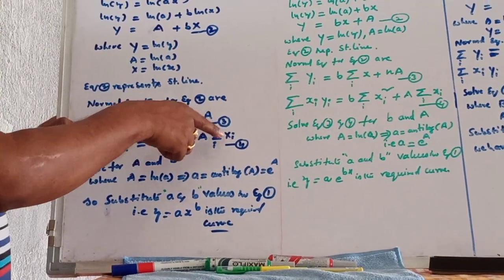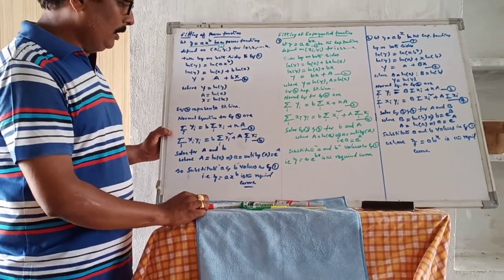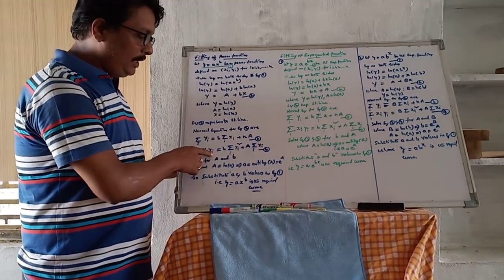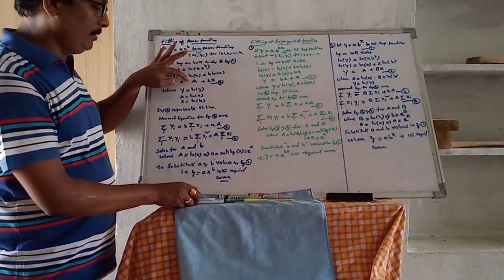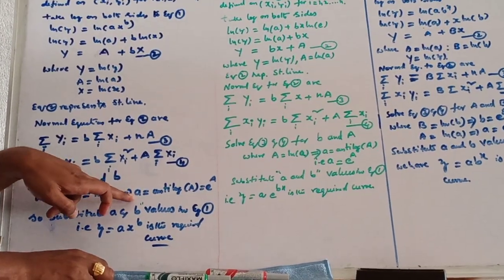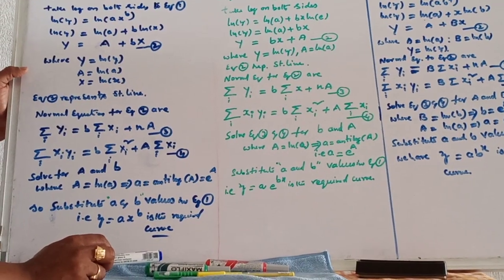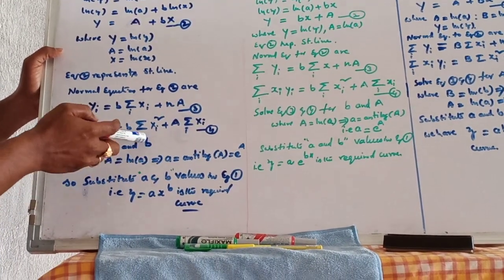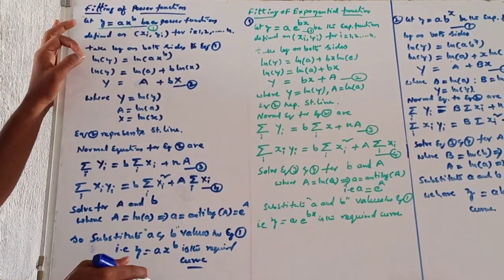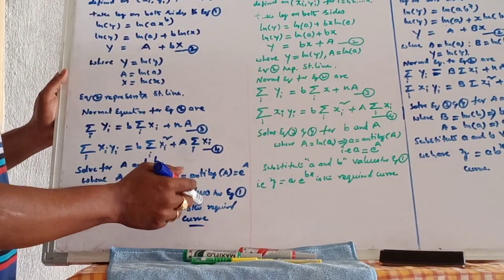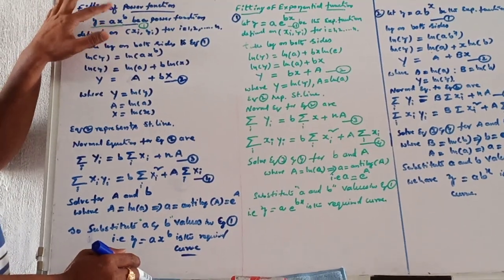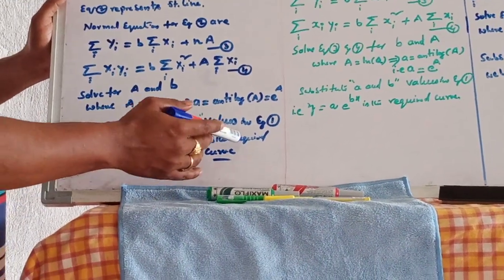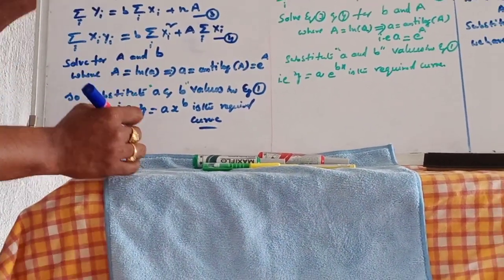Using the data, construct all sigma X, sigma Y, sigma X squared, and sigma X times Y values. Then solve equation 3 and equation 4 for capital A and small b. Since capital A is log a, we get small a equal to anti-log of capital A, which is e to the power of capital A. Substitute small a and small b in y equal to a times x power b — this is the required best-fit power curve equation.